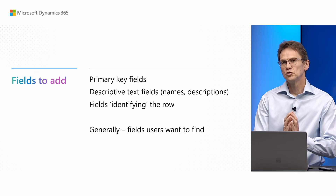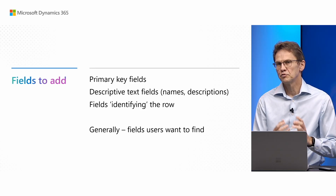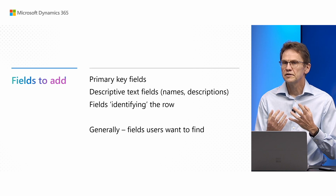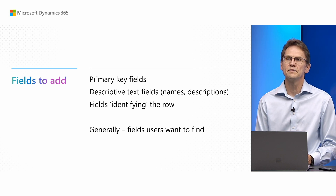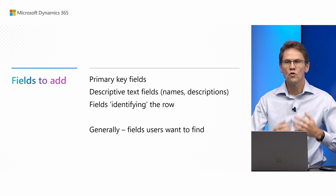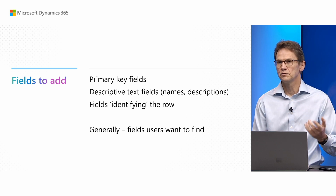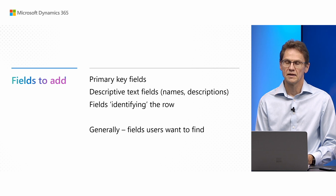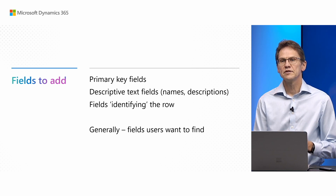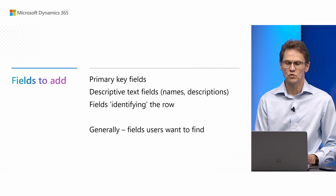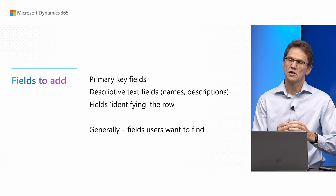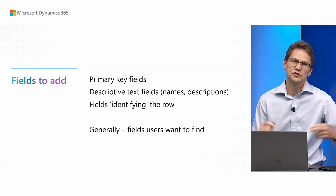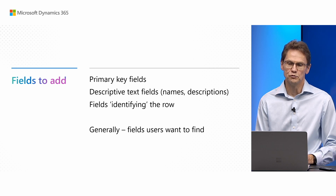You would want to add this to the following types of fields: the primary key fields, descriptive text fields that uniquely describe the item, or other fields identifying the row — such as a name. Generally you should add this to fields that users want to find, not to fields where there are thousands of them or where it's a grouping mechanism.